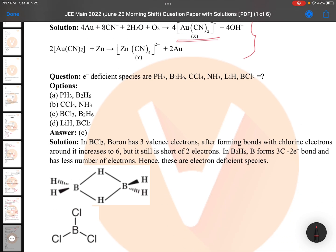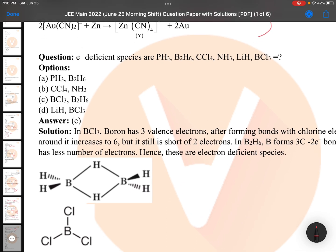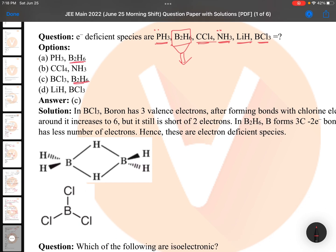Electron deficient species: PH3 is not electron deficient, it is having a lone pair of electrons. B2H6, because of banana bond I think you remember very easily, B2H6 should be there. B2H6 is here and B2H6 is here. Then CCl4, no it is electron precise. Ammonia lone pair, it is electron rich. Lithium hydride and BCl3 - BCl3 if you see it is also electron deficient. BCl3 is electron deficient and B2H6 is also electron deficient.